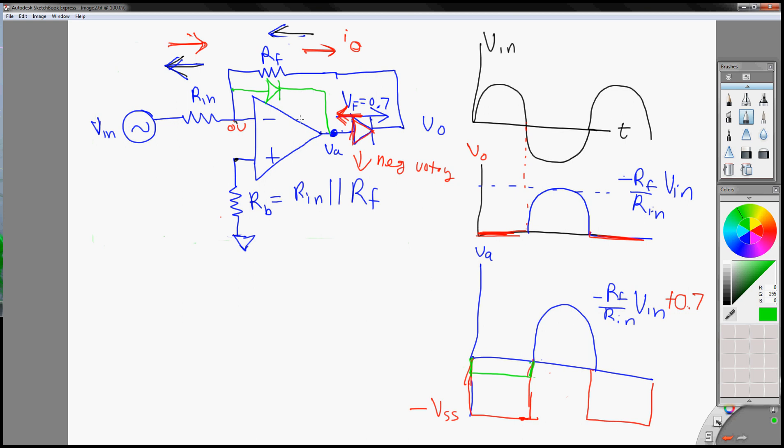So during the off cycle of this op amp, it will saturate, but only to 0.7, minus 0.7 volts. And that's how you can improve the transition speed so you have less delay.